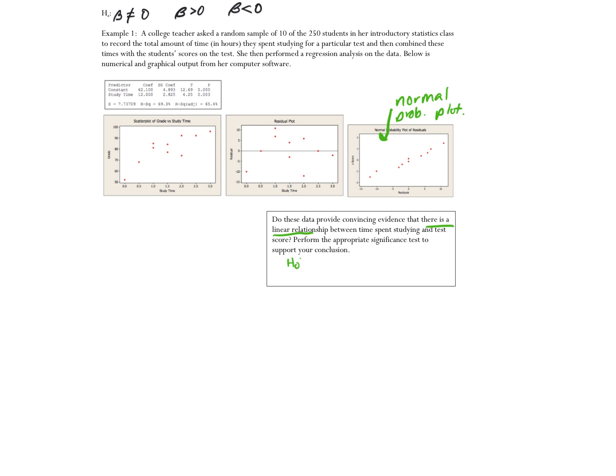We want to answer the question, do these data provide convincing evidence that there is a relationship? So my null hypothesis will be that beta equals zero. My alternative in this case, since we're not worrying about whether the relationship is positive or negative, my alternative is going to be that beta is not equal to zero. So we have our hypotheses written, we're going to do a t-test for beta, where beta is equal to the slope of the true line relating study time and grade.